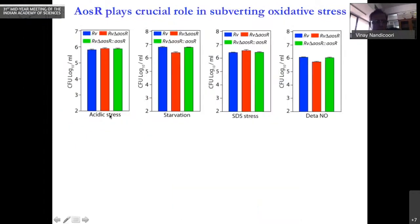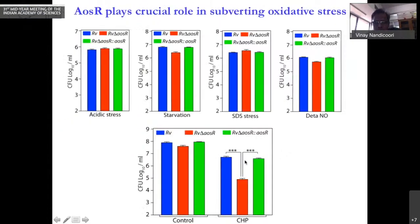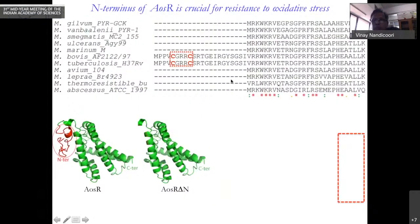We put acidic stress, nothing happened. Starvation, nothing happened. SDS stress, nothing happened. And tBHP NO, which is nitrosative stress, nothing happened. But interestingly, when we put oxidative stress, we saw approximately one and a half log fold difference. After doing this, we went ahead and did it with many other oxidizing agents and it works the same way. Anytime we put oxidative stress, the mutant shows compromised survival compared to the wild type and complemented strain.